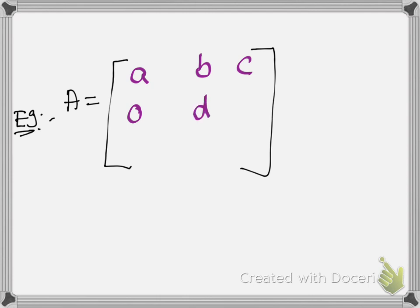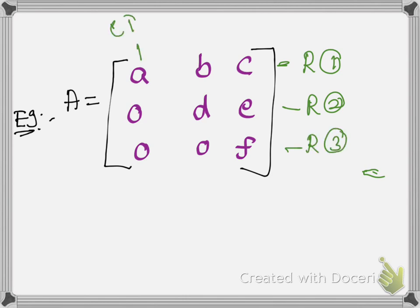Example: A equals a matrix with elements a, b, c in the first row, 0, d, e in the second row, and 0, 0, f in the third row. This is first row, second row, third row. This is first column, second column, third column.